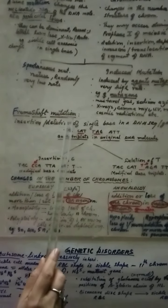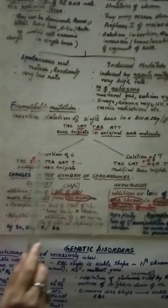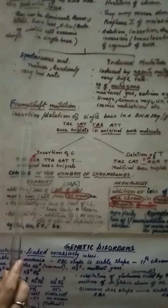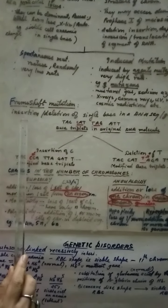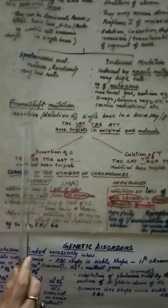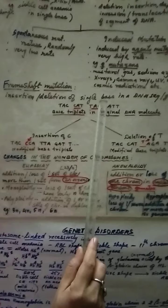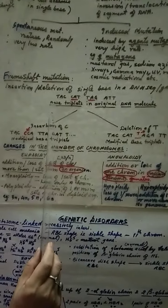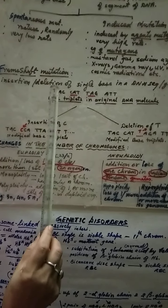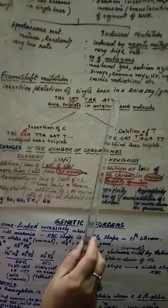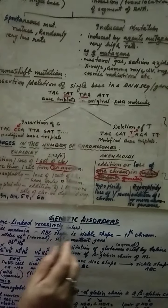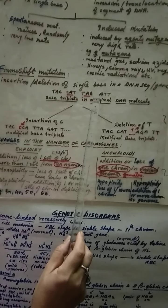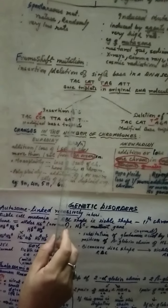First is frame shift mutation. In frame shift mutation it is done because of insertion, that is putting in, or deletion, or removing of a single base in a DNA sequence or a gene. Suppose this is a triplet code on the DNA. This triplet code can be disturbed.